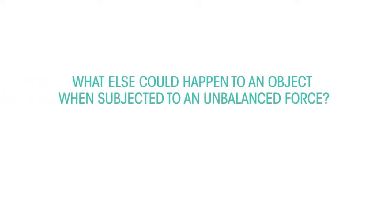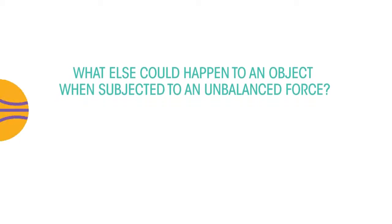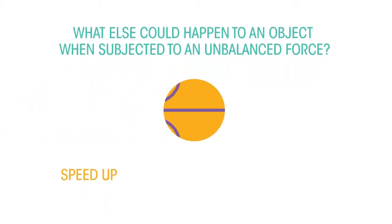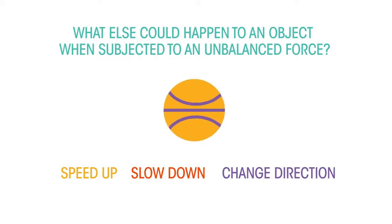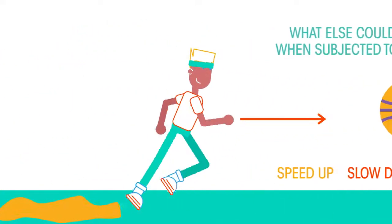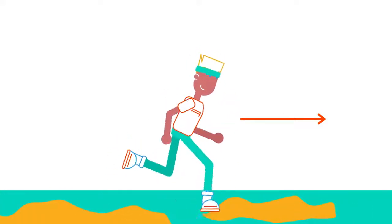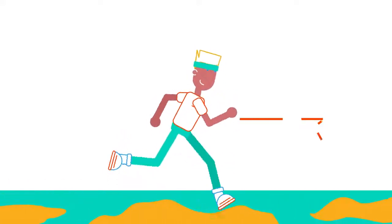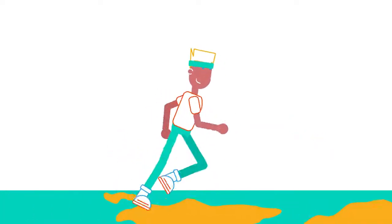What else could happen to an object when subjected to an unbalanced force? When forces are unbalanced, objects can speed up, slow down like the thrown ball, but also change direction. Think of trying to change your direction on a muddy football field. Normally you dig your boot into the ground to provide the force to change your direction, but in the mud you just carry on in the same direction and you call it a skid.